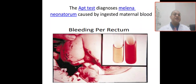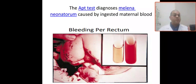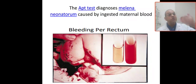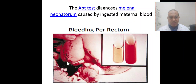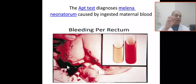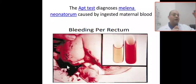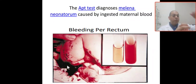The Apt test diagnoses meleana neonatorum caused by ingested maternal blood. You can see the baby having melena here — this is the blood. You take 4 ml from this melena or blood sample, add 1 ml sodium hydroxide, mix them together, and then perform centrifugation.